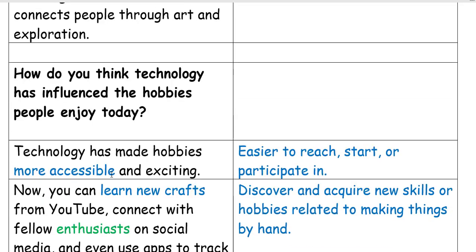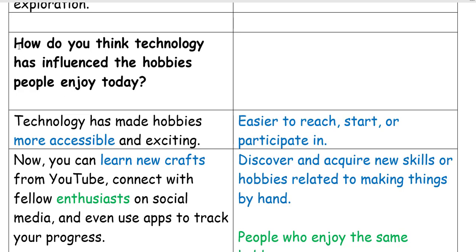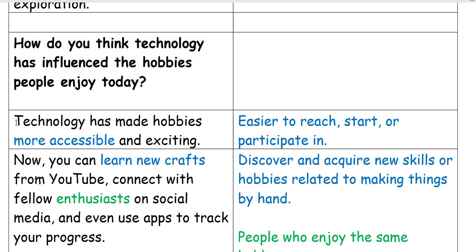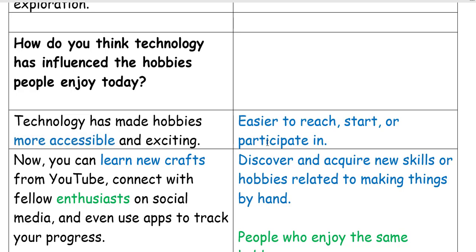Next question: How do you think technology has influenced the hobbies people enjoy today? Technology has made hobbies more accessible and exciting. 'More accessible' means that something has become easier to reach, start, or participate in.